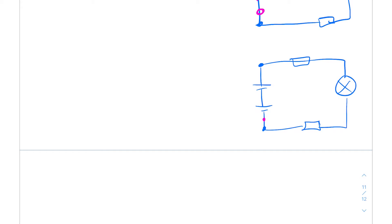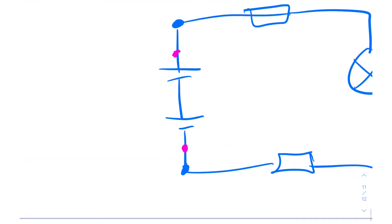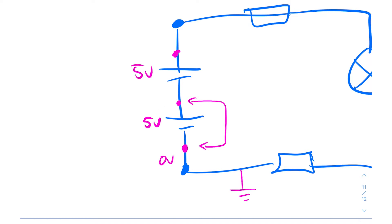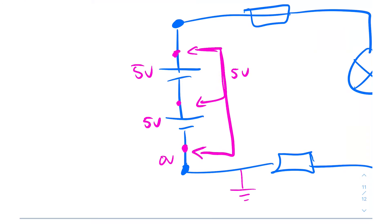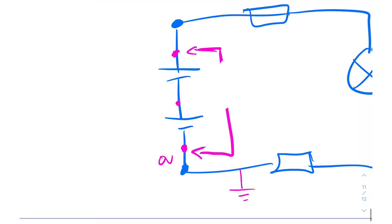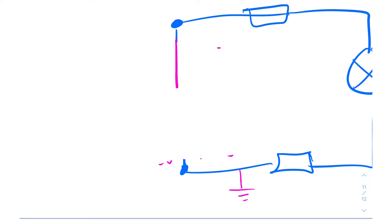If the voltage at the bottom is zero volts - say you had a ground node there - and this source is 5 volts, then the potential difference between those two points is 5 volts. Then if the next source is also 5 volts, the voltage difference across that one is also 5 volts. So the total voltage difference between the bottom and top is 10 volts. So you can replace the whole thing with just one 10-volt source.